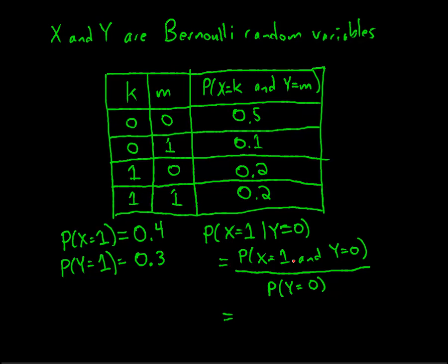Okay, and the probability that X is equal to 1 and Y is equal to 0 is right here. That's 0.2 divided by the probability that Y is 0 is 1 minus the probability that Y is 1, so that's 0.7. So we get 2 sevenths, which is certainly not equal to the probability that X is 1, which is 0.4.